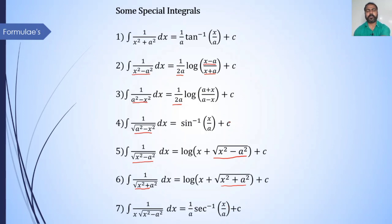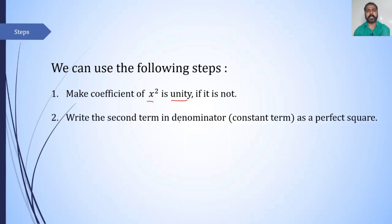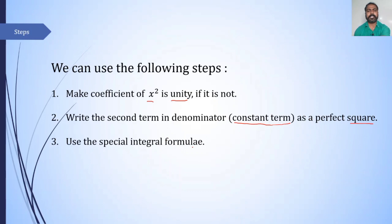Students, to solve the examples you must remember all these formulas. Here are the steps to solve examples on integration of 1 upon (variable square and constant square) dx. First step: make the coefficient of x² unity, if it is not. Second step: write the constant term in the denominator as a perfect square. Third step: use the special integral formulae.